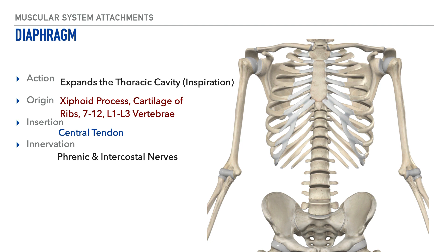The diaphragm acts primarily to expand the thoracic cavity, which allows for inspiration, or the act of breathing in, to occur. This muscle originates on several landmarks: specifically the xiphoid process, the cartilage of ribs seven through twelve, and on the L1 through L3 lumbar vertebrae.